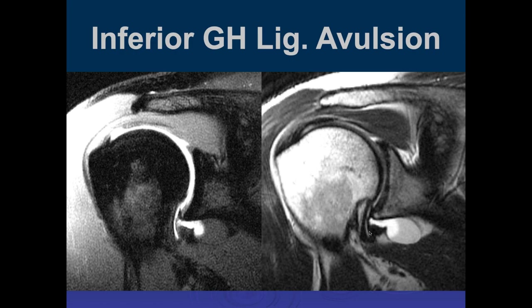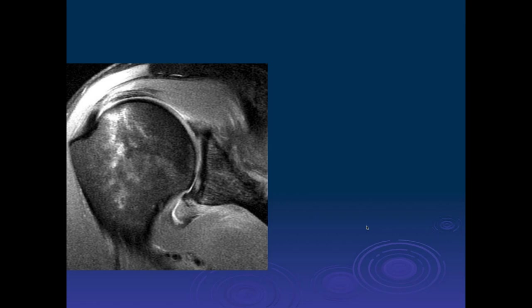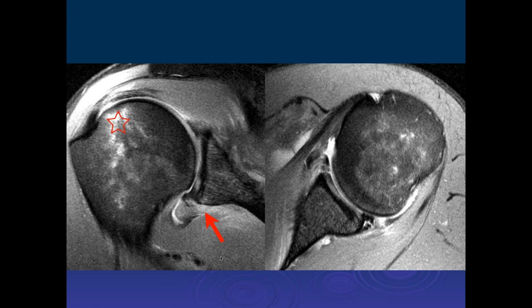There's edema in the lateral humeral head suggesting an impaction injury. There's also some irregularity at the glenoid attachment of the inferior glenohumeral ligament, and it looks like there's probably a labral tear as well — so possibly a GAGL and an inferior labral tear.